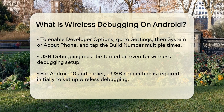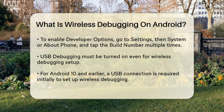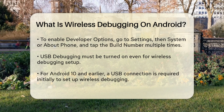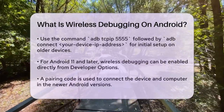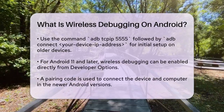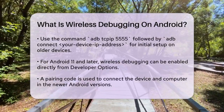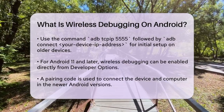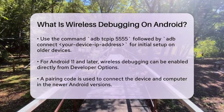For devices running Android 10 or earlier, you'll need to use a USB connection initially. You'll run the ADB TCP/IP 5555 command in your computer's terminal or command prompt, followed by ADB Connect and your device IP address. This sets up the wireless connection, and after that, you can disconnect the USB cable and continue debugging wirelessly.